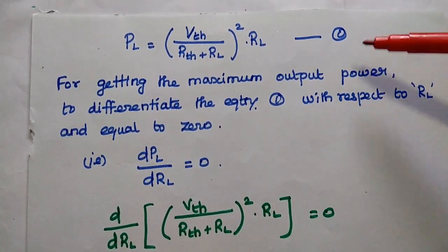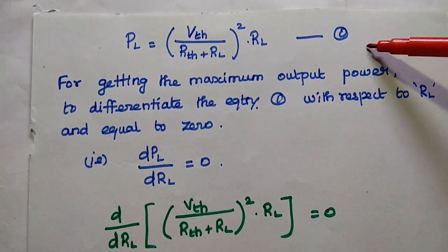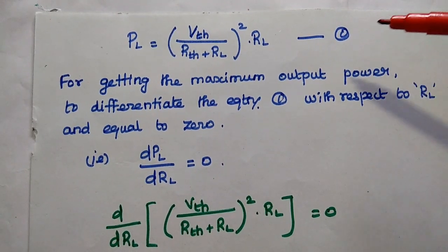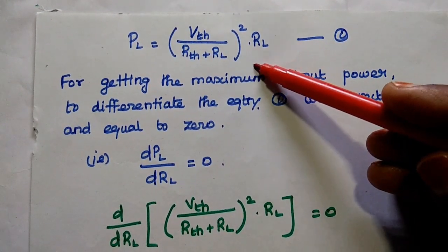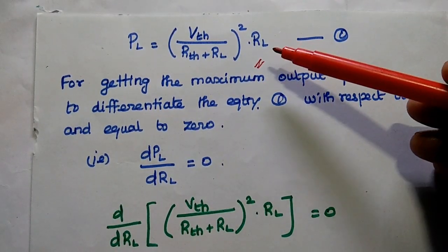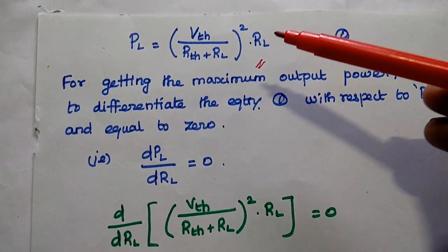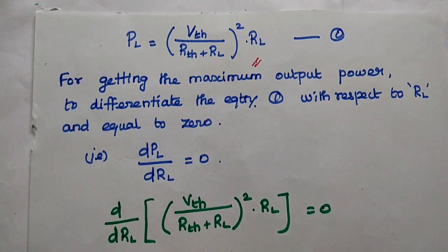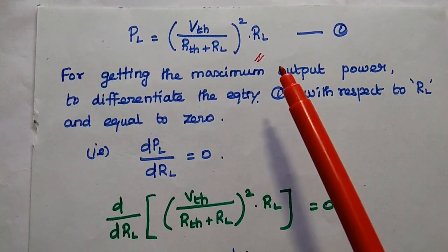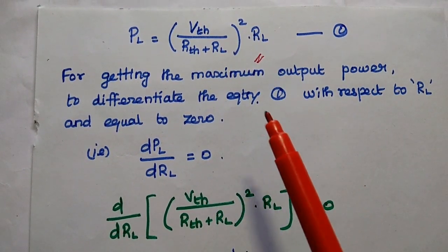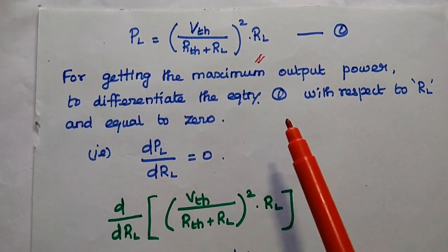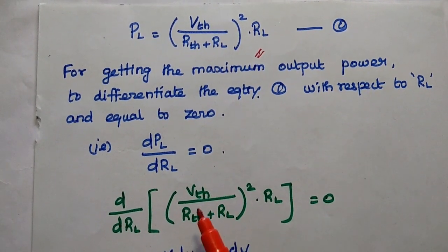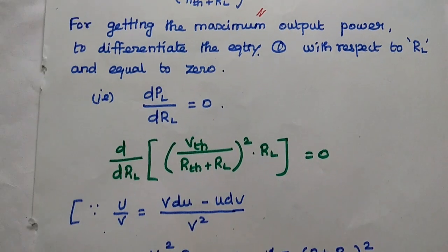Next we are going to consider the mathematical calculation for getting the maximum output power. We are going to differentiate this first equation with respect to RL and then set this value equal to zero to get the maximum output power. The output power depends only on the load resistance value, and setting the derivative to zero gives us the maximum power condition.